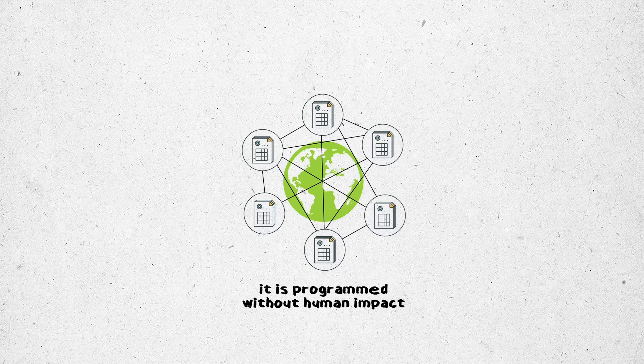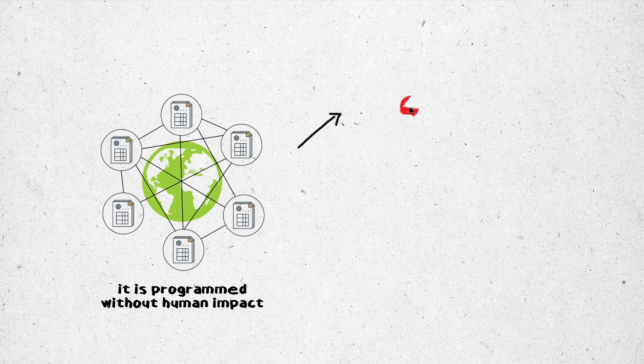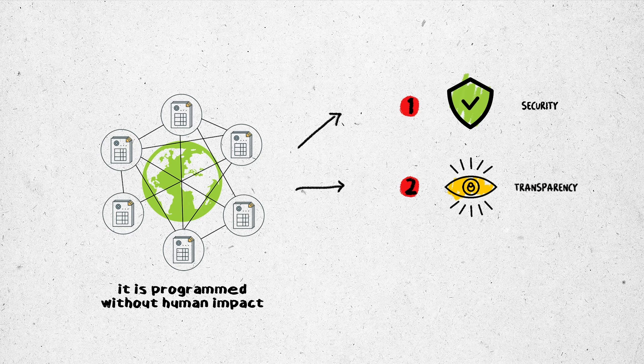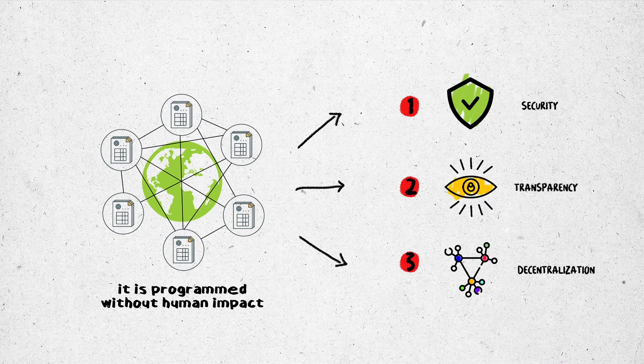Since this is programmed without human impact, when computers record the transaction in the general ledger, they must assure these codes: first, security; second, transparency; third, decentralization.